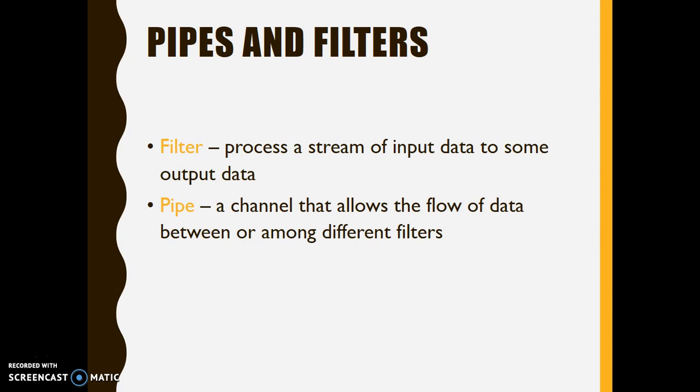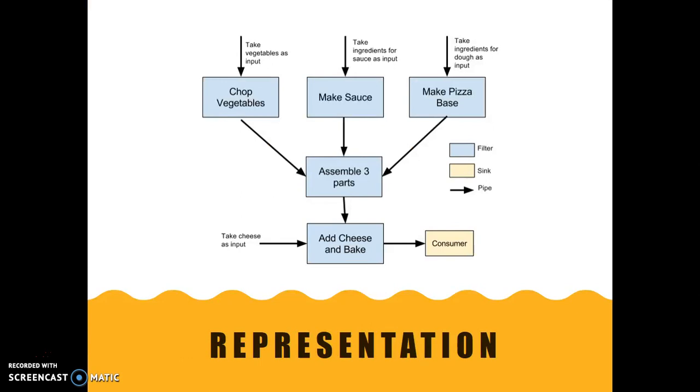Now let's proceed to some visual representation. Let's start with this diagram. This diagram is actually a representation of how a pizza is made and delivered to a consumer using the diagram. We demonstrate how a pizza is made using the pipes and filters architectural pattern. In this example, we are using five different filters. As you can see, they're marked with these boxes colored blue. Three of them actually are working asynchronously.